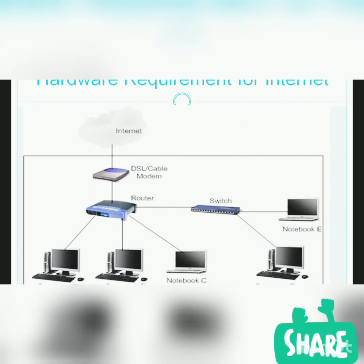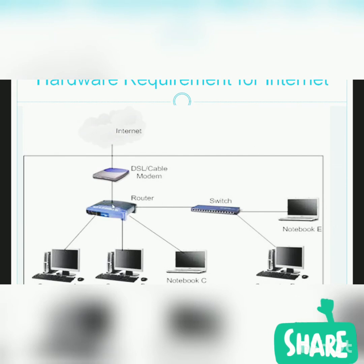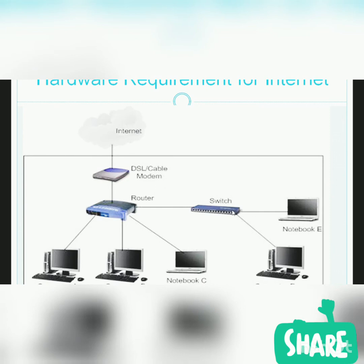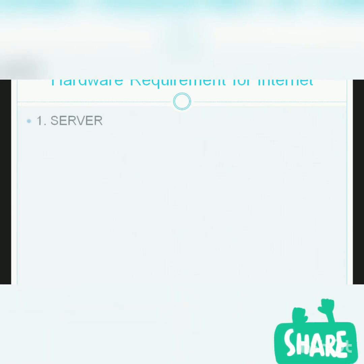At our end, we have a DSL cable — that is a Digital Subscriber Line — which is connected to the telephone line. Then there is a router, and through the router we are connected to our system. There are many computer systems we can connect, including laptops, and switches can also be used to connect computers through the internet.